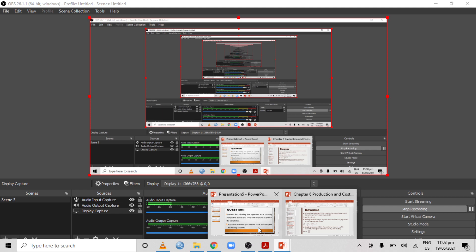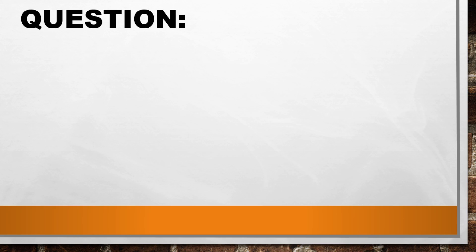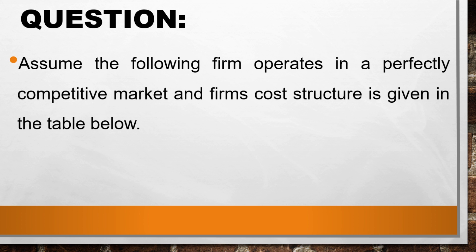Hello guys. Today I want us to look at and discuss some of the questions you can expect in cost and production as a chapter in economics. The question says: assume the following firm operates in a perfectly competitive market and the firm's cost structure is given in the table below. Copy the table into your answer book and complete the missing columns.